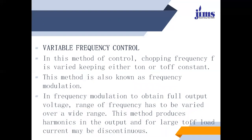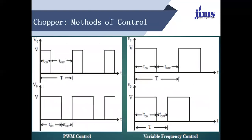The variable frequency method is also known as frequency modulation. In frequency modulation, to obtain a full output voltage range, the frequency has to be varied over a wide range. This method produces harmonics in the output, and for large off-time T-off, the load current may be in a discontinuous condition.